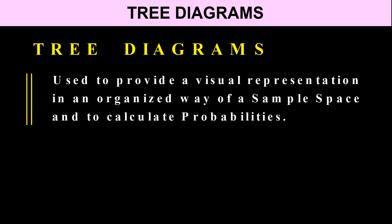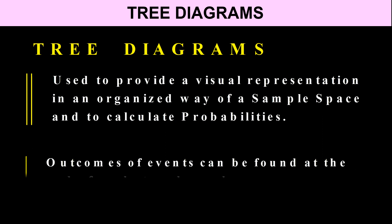Tree diagrams are used to provide a visual representation in an organized way of a sample space and to calculate the resulting probabilities. The outcomes of events can be found at the end of each branch. So the purpose is to give us a visual representation in an organized way of a sample space and to calculate the relevant probabilities.